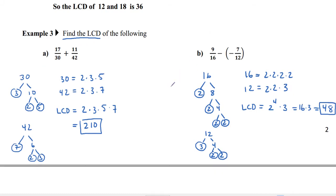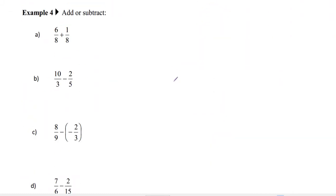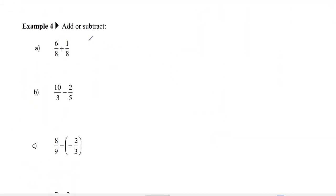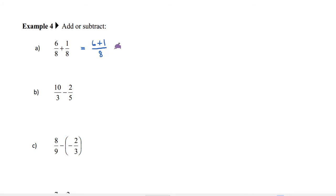Now let's actually add and subtract fractions. First: 6 over 8 plus 1 over 8. We already have a common denominator, so just add the numerators and keep the denominator — do not add the denominators. You get 7 over 8.